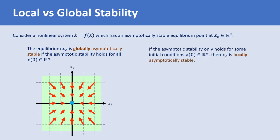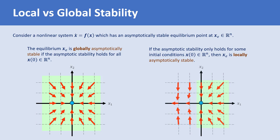But if the asymptotic stability only holds for some of the initial conditions in the space, then the equilibrium point is locally asymptotically stable. In the right-hand side vector field, the trajectories starting in the green area converge to the equilibrium point at the origin, but other trajectories starting in the area highlighted in yellow do not converge to the origin. So in this case, the origin is only locally asymptotically stable.